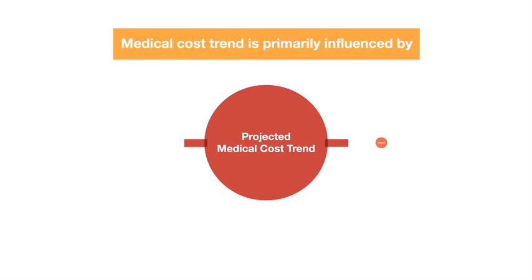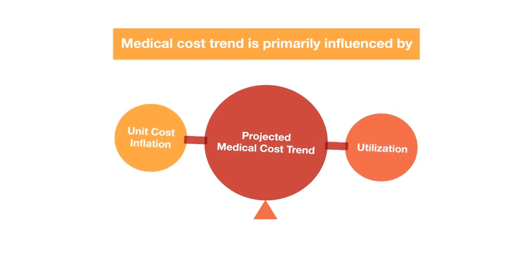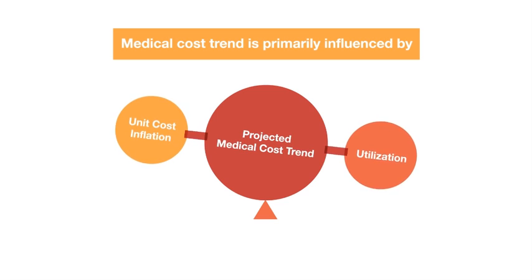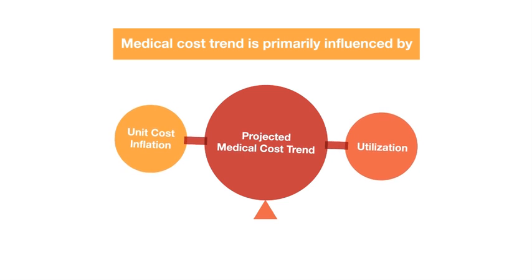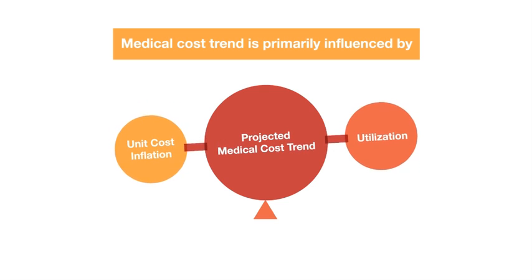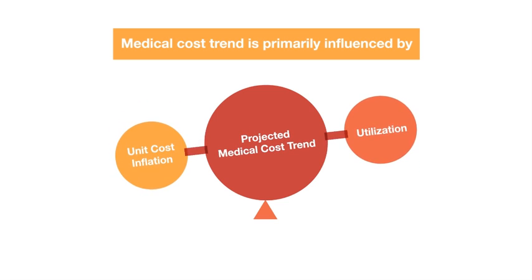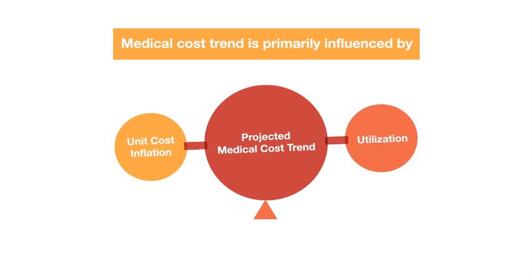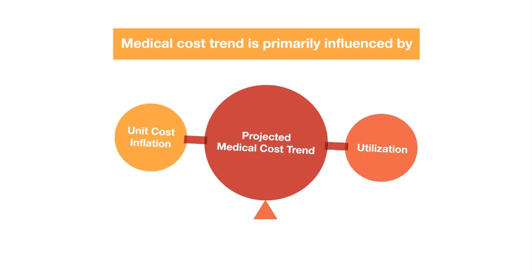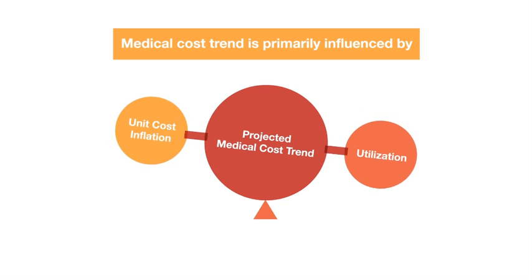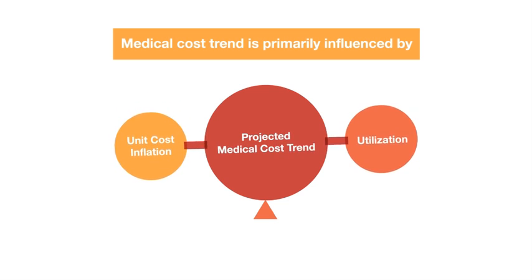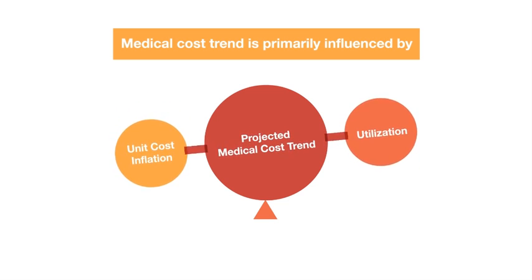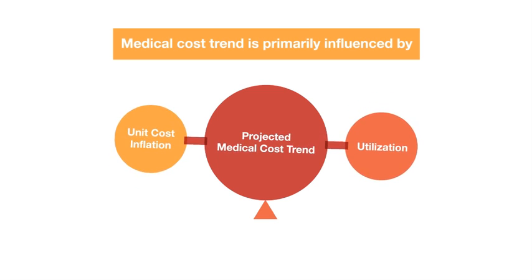Medical cost trend is primarily influenced by unit cost inflation and utilization. Unit cost inflation is the change in the cost per unit of medical products and services, and utilization is the change in the volume of health care consumed.